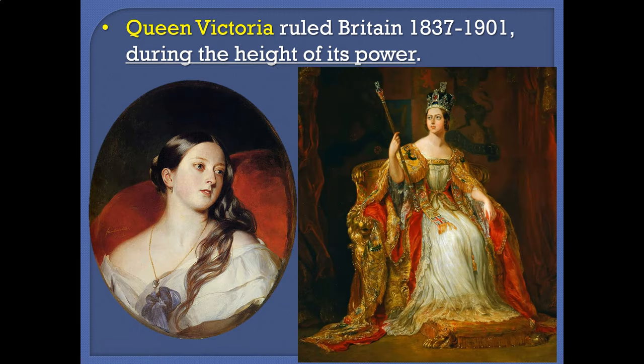The reason I bring up the longest ruling monarch being a woman is that the second longest ruling monarch in Britain is also a woman — Queen Victoria. She took over in 1837, and her route to becoming queen was kind of unexpected: a series of relatives had to die, and it was almost dropped in her lap. She wasn't really prepared to become queen. Nonetheless, she is going to rule over really the peak of British power, from 1837 to her death in 1901.